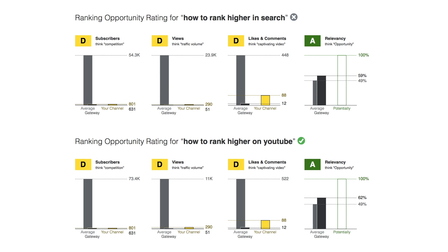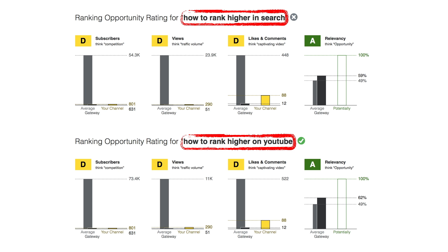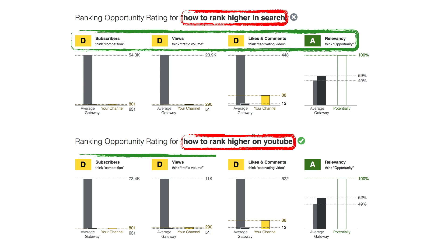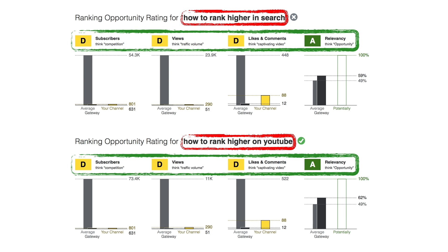Let's set the stage. You found two keywords you could target with your next video — for example, how to rank higher in search and how to rank higher on YouTube. You can clearly see that the competition is low enough that your video will be able to rank for either one. But which keyword do you choose?